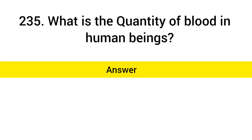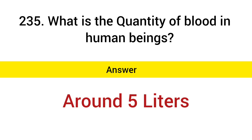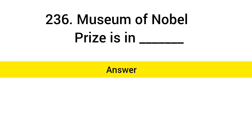What is the quantity of blood in human beings? Answer: Around 5 liters. Museum of Nobel Prize is in? Answer: Sweden.